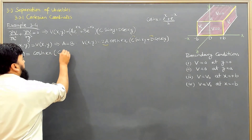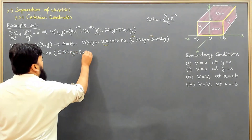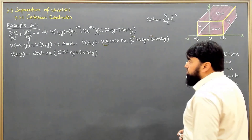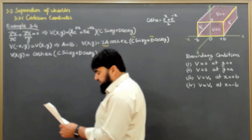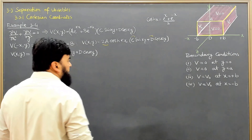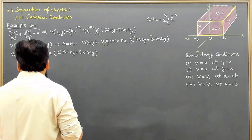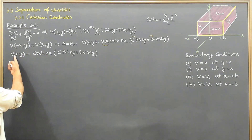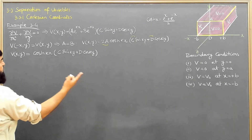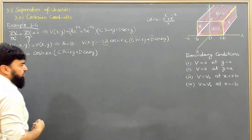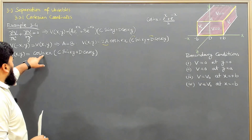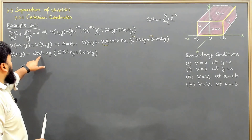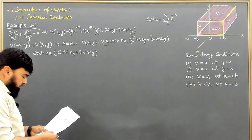With this final form, we now apply the remaining boundary conditions. The third boundary condition states that at x=+b, V=V₀, and similarly at x=−b, V=V₀. Since cosh(kx) is an even function, evaluating at +b and −b both give cosh(kb), so the symmetric boundary condition is automatically satisfied and cosh(kb) multiplied by the y-part equals V₀.